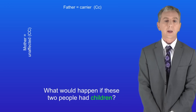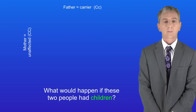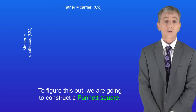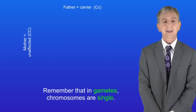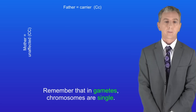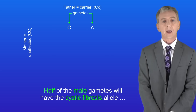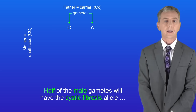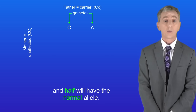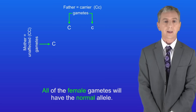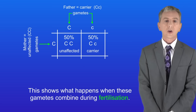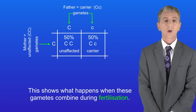So what would happen if these two people had children? To figure this out we're going to construct a Punnett square. First we write down the genotypes of the gametes. Remember that in gametes chromosomes are single. So half of the male gametes will have the cystic fibrosis allele and half will have the normal allele. All of the female gametes will have the normal allele. Here is what happens when these gametes combine during fertilization.